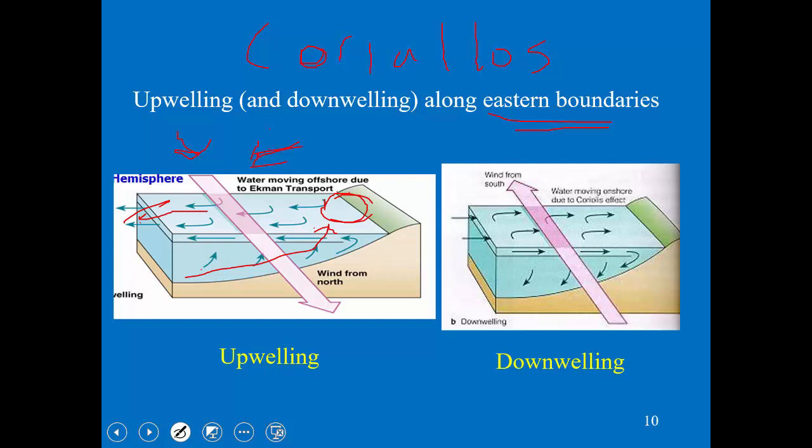When the opposite occurs — when the wind is along the west coast going from the southeast to the northwest — the same principles are at work. Now instead of the water moving to the west, it moves to the east because the Coriolis effect still moves it at right angles to the wind direction. Now that water is moving onshore and basically forcing the water down, so we have downwelling — just the opposite of upwelling.